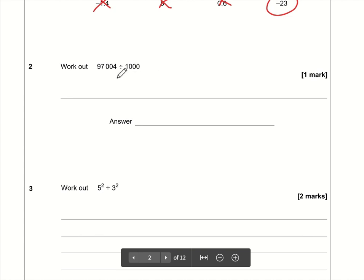Work out 97004 divided by 1000. Okay, so I know some people would definitely struggle with this question. The key thing really for me is to write it well. If you are struggling, the key thing is to write it as 97004.0.